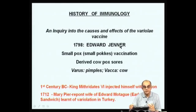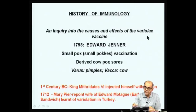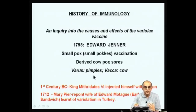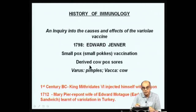During those days, smallpox was a scourge — it was killing a lot of people, disfiguring those who survived. Edward Jenner actually looked at the causes and effects of variola vaccinae. Varus means pimples and vacca means cow. During those days, it was a widely accepted observation that milk maids or cow maids, who used to milk cows, would come down with a disease called cowpox, where they had sores on their skin, and these people rarely ever came down with smallpox — hence the association between pimples, cow, and the word variolation.